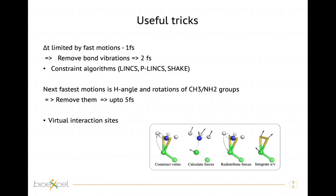The fastest motions are angles involving hydrogen and the rotation of methyl and amine groups. There is an option to remove them using virtual interaction sites, allowing you to go up to five femtoseconds. You set a virtual interaction site, model the positions of atoms around it, calculate the real forces on those modeled positions, redistribute the forces onto the virtual sites, and use only the virtual site positions for integration.